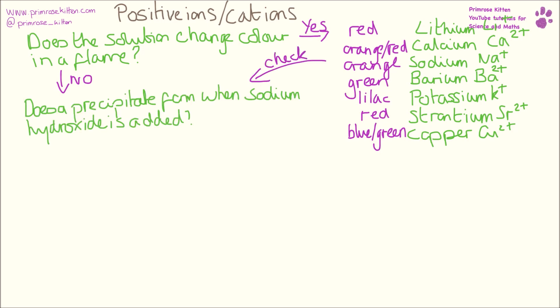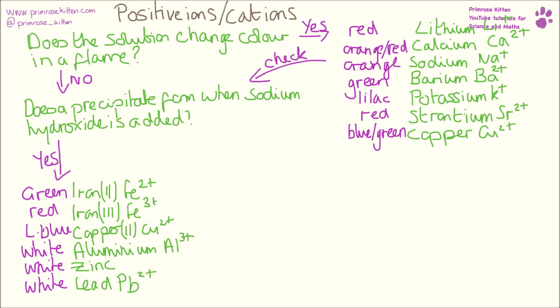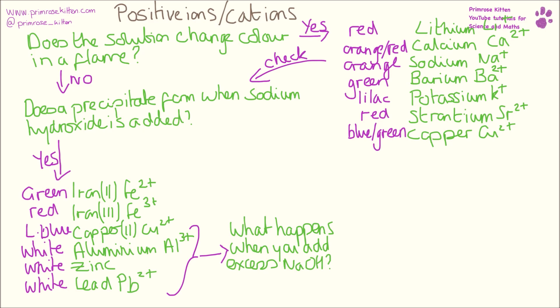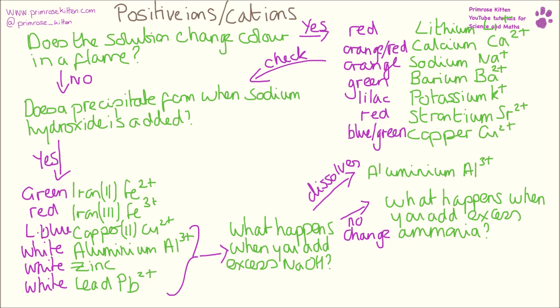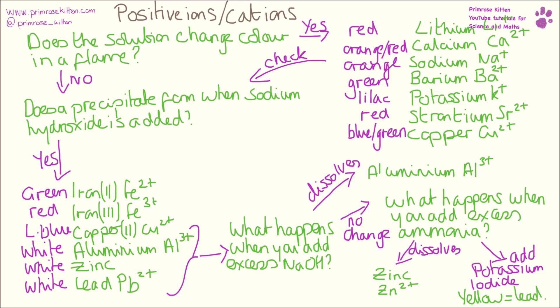Because so many of the flame tests are the same, we need to do some more tests, and even if it didn't change colour in a flame test we need to do another test. Does a precipitate form when sodium hydroxide is added? Iron(II) is going to form a green precipitate. Iron(III) is going to form a red precipitate. Copper is going to form a light blue precipitate. Aluminium, zinc, and lead are going to form white precipitates. We can differentiate the last three by adding excess sodium hydroxide — if it dissolves, it's aluminium. If there is no change, we can add excess ammonia; if it dissolves, it's a zinc ion. If it doesn't dissolve, we can add potassium iodide, and if it goes yellow, it is lead.